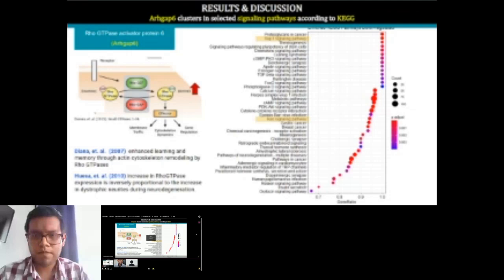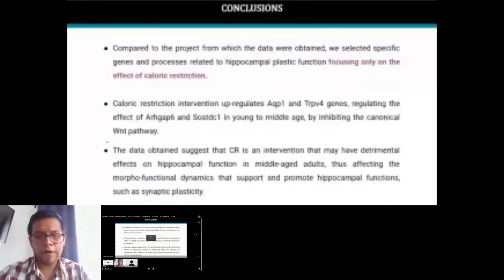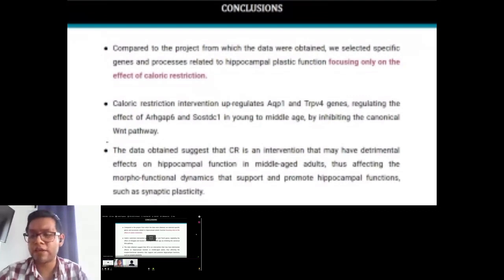This is another gene that we found under-regulated. In general, we found that the calorie restriction in the earlier stages may have a detrimental effect because it could damage or could lack the plasticity in the hippocampus, at least at the beginning of the diet.